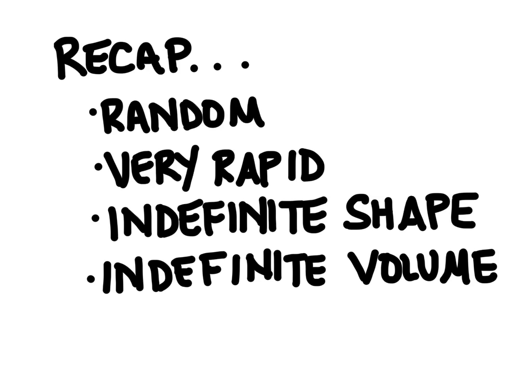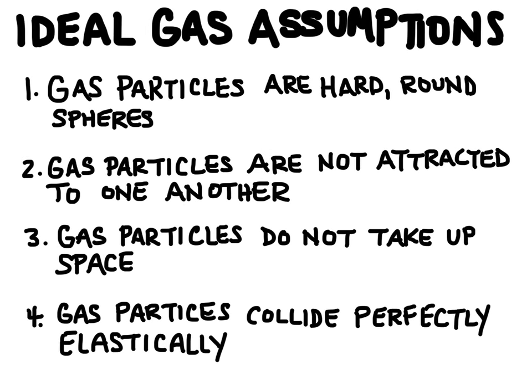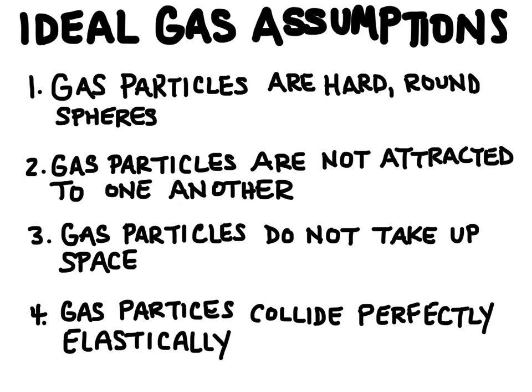The rest of the lessons in this series are going to focus on gases. We're going to simplify our model of gases by ignoring a bit of reality — we're going to be studying ideal gases rather than real gases, because real gases are just a bit too complicated. To study ideal gases, we have to make some assumptions. The first assumption is that gas particles are hard, round spheres — in reality, molecules come in all sorts of different shapes and sizes. The second assumption is that gas particles are not attracted to one another. This isn't a crazy assumption because the particles go past each other so quickly that they don't really have time to feel those attractive forces.